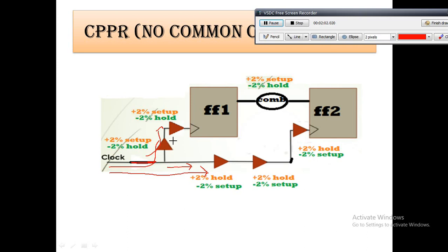While doing setup analysis, three buffers in the launching path would be derated by plus two percent, and the capturing part would be derated by minus two percent, and the data path would be derated by plus two percent. For hold analysis it is the opposite: the clock tree buffers in the launching path would be derated by minus two percent, the capturing path by plus two percent, and the data path by minus two percent.